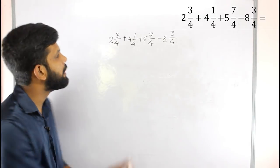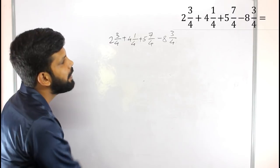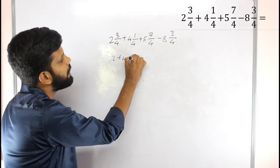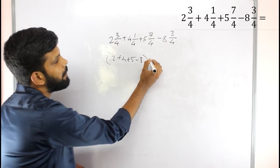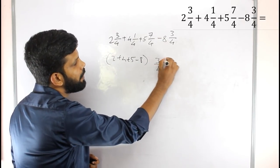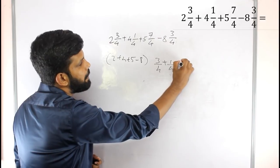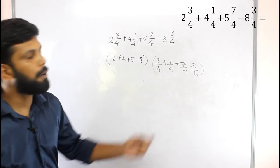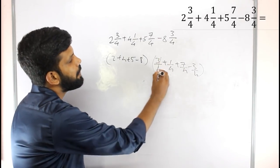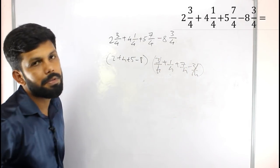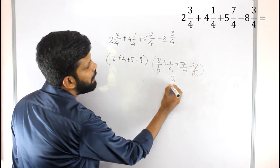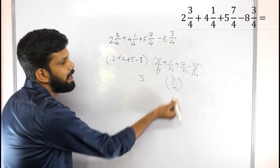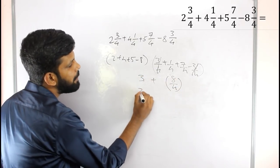We add in the same way: 2 plus 4 plus 5 minus 8, and on the other side 3 by 4 plus 1 by 4 plus 7 by 4 minus 3 by 4. So here x equals 2 plus 3 by 4.